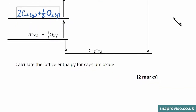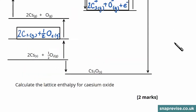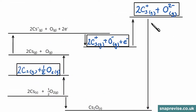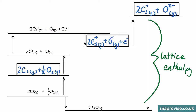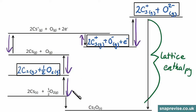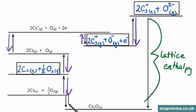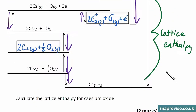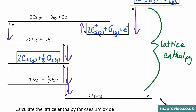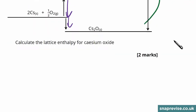There is now a second part to this question: calculate the lattice enthalpy for caesium oxide. Going back to our Born-Haber cycle, the lattice enthalpy is the step from the gaseous ions to the solid lattice. We'll use the cycle to follow the other route to find this enthalpy change: going back along the second electron affinity, back along the first electron affinity, back against the first ionisation energy, down against both atomisations, and then along in the same direction as the enthalpy change of formation for caesium oxide.